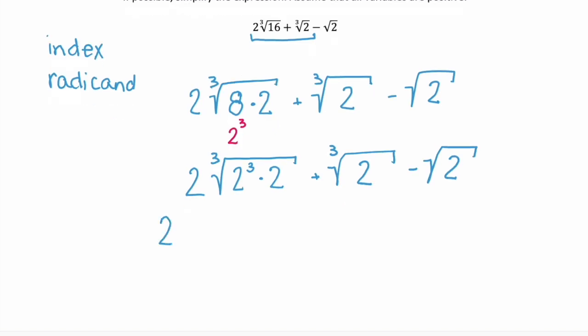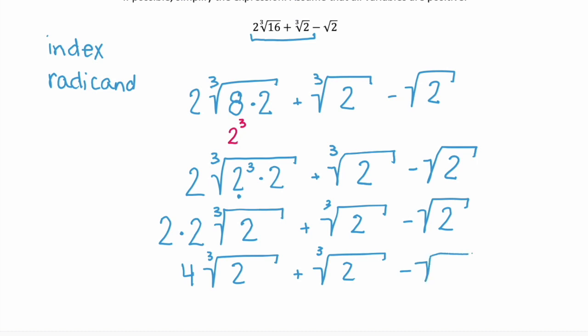The coefficient in front is going to be 2 times the 2 that we got from the cube root of 2 cubed. Left behind we have the cube root of 2, and our second term stays as the cube root of 2, and our last term is the square root of 2. This first term simplifies: 2 times 2 is 4, so this is 4 cube root of 2 plus the cube root of 2 minus the square root of 2.